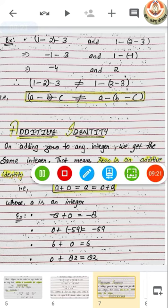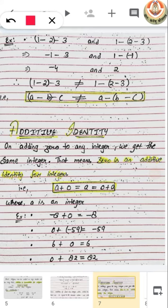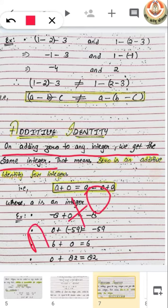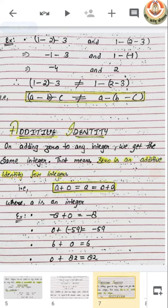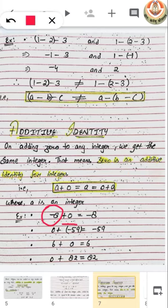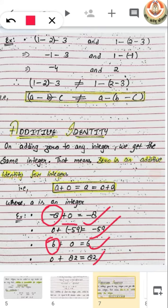Now there is additive identity. On adding 0 to any integer, we get the same integer as the answer. So 0 is the additive identity for integers.